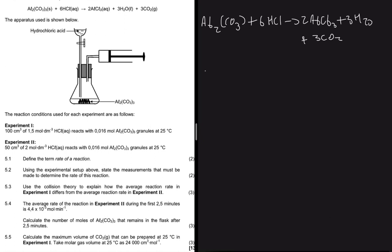Question 5.1 asks us to define the rate of a reaction. The rate of reaction is the change in concentration of the products or reactants per unit time. Formula-wise, the rate of reaction equals the change in concentration of the products divided by the unit time.